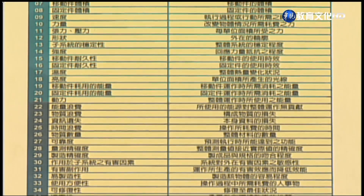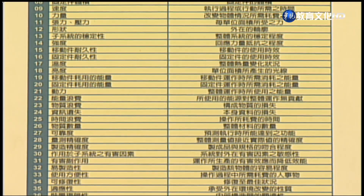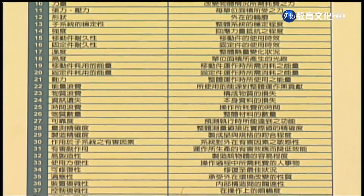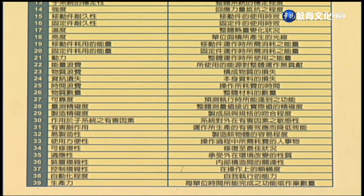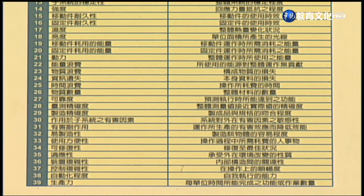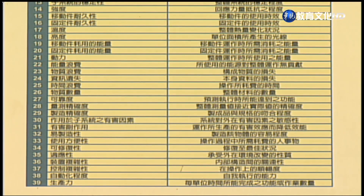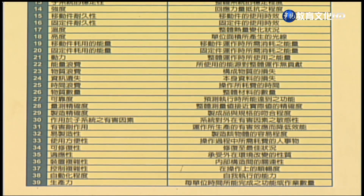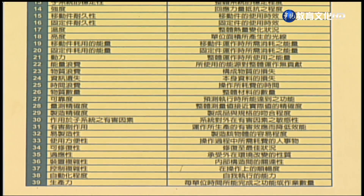温度（整体热量变化状况）、亮度（单位面积所产生的光线）、移动件耗用的能量、固定件耗用的能量、动力（整体运作时所使用的能量）、能量浪费、物质浪费、资讯遗失、时间浪费、物质数量（整体材料的数量）、可靠度（预测执行时所能达到的程度）、量测精确度、制造精确度（制成品与规格的吻合程度）、作用于子系统之有害因素、有害副作用（运作所产生的有害效应而降低效能）。